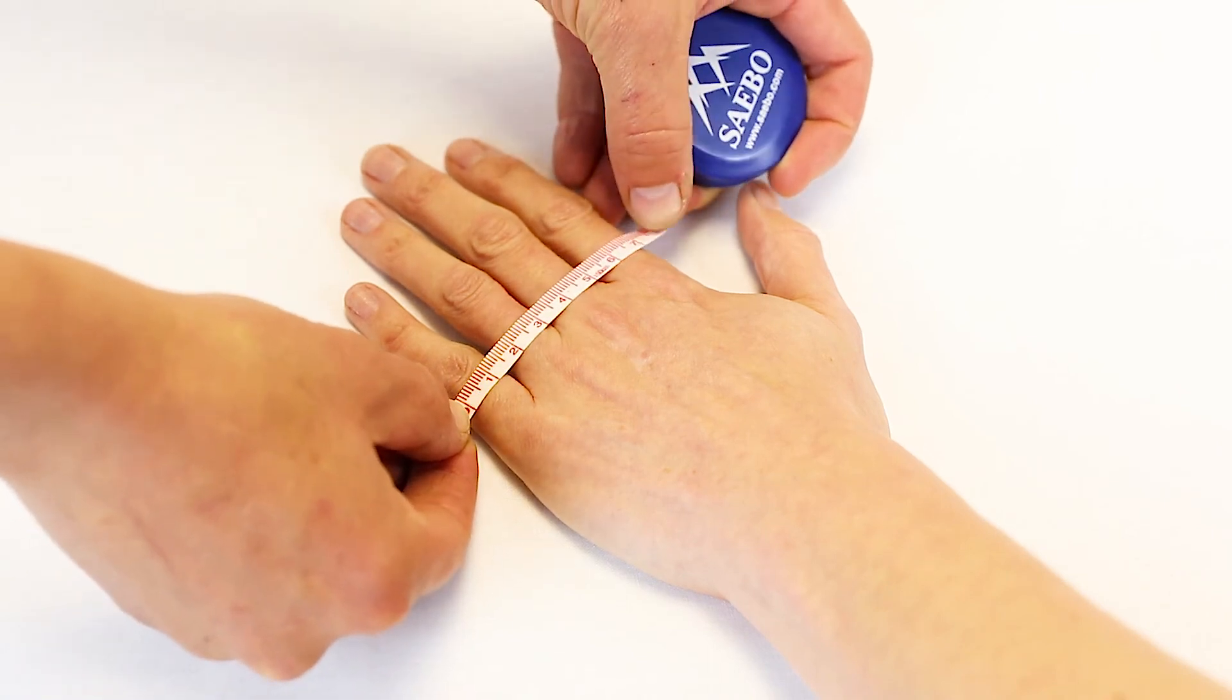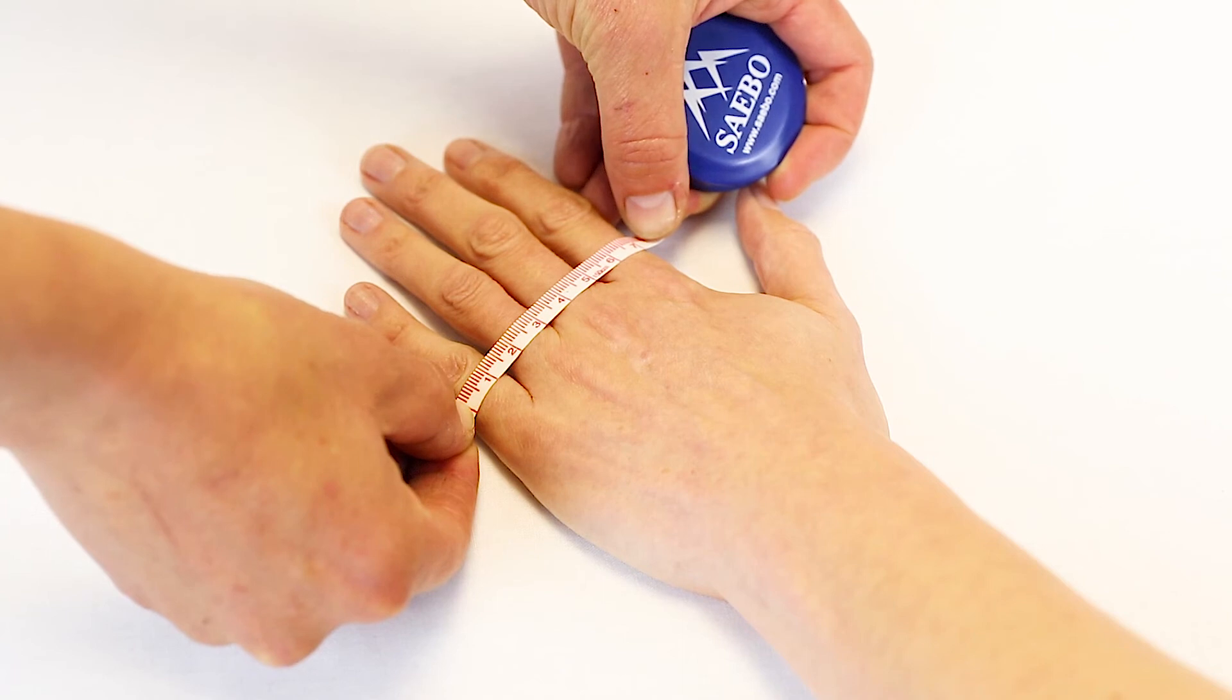Please do not round up or round down the measurement. This measurement determines if a small, medium, or large Sabo stretch is required and can be read in centimeters or inches.